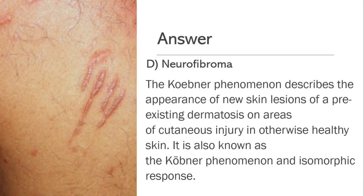The answer is Option D, Neurofibroma. The Koebner phenomenon describes the appearance of new skin lesions of a pre-existing dermatosis on areas of cutaneous injury in otherwise healthy skin. It is also known as the Koebner phenomenon and isomorphic response.